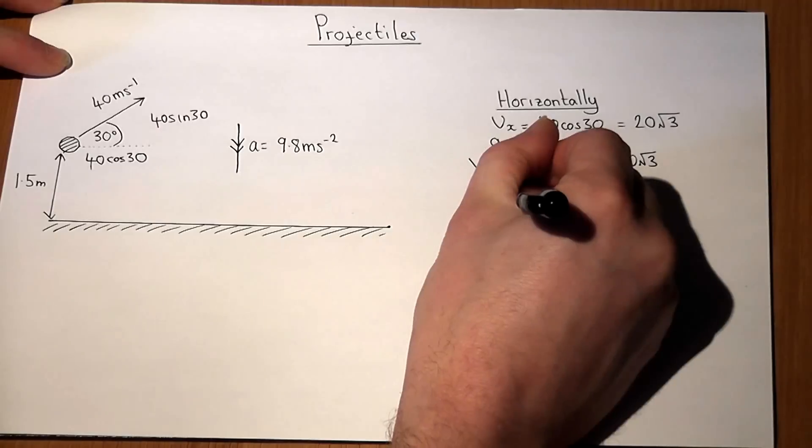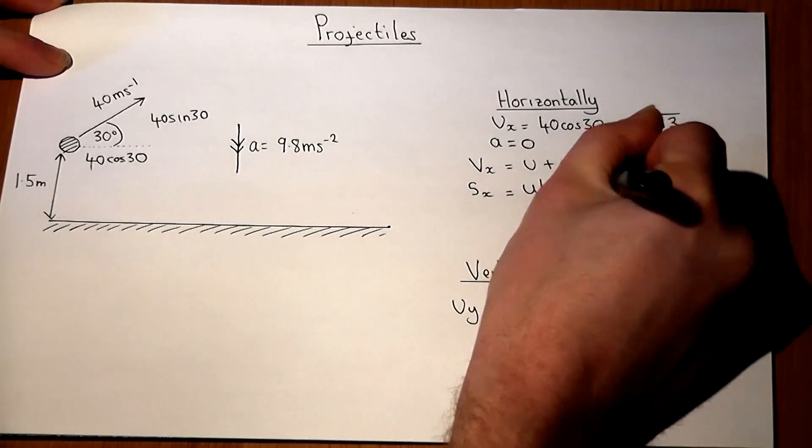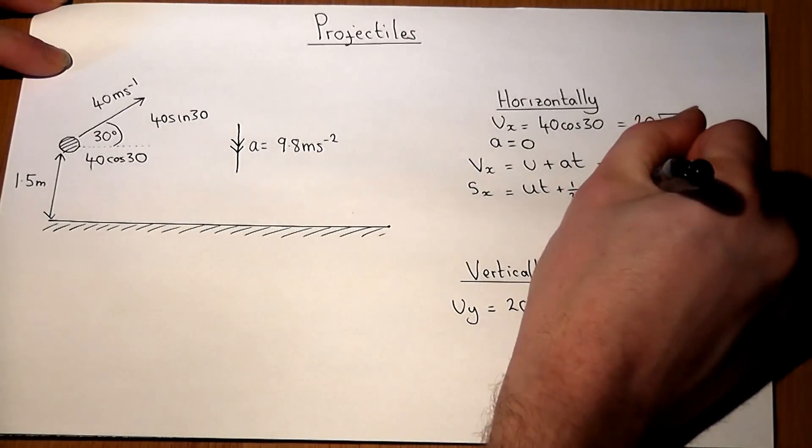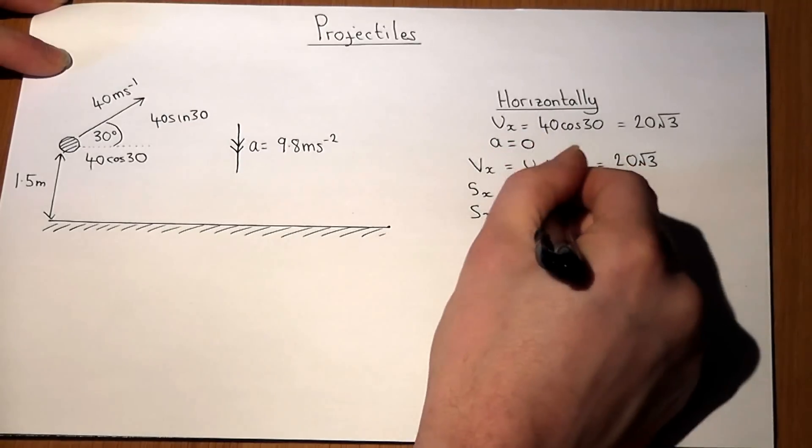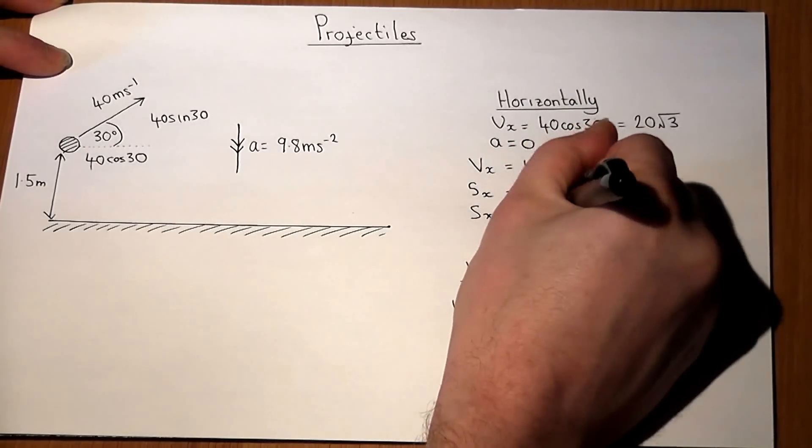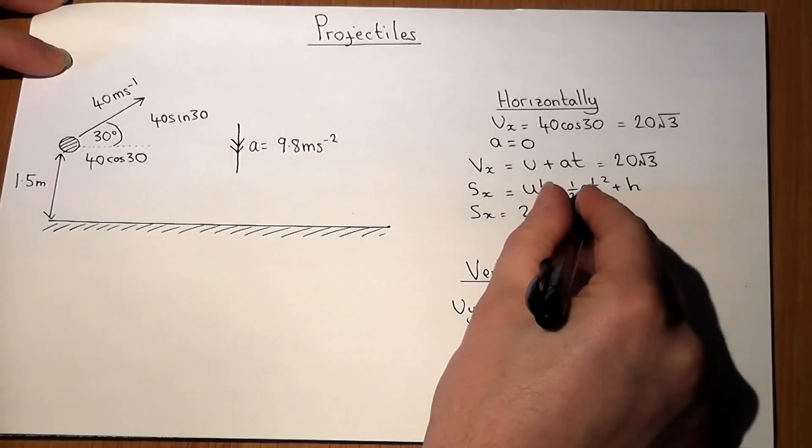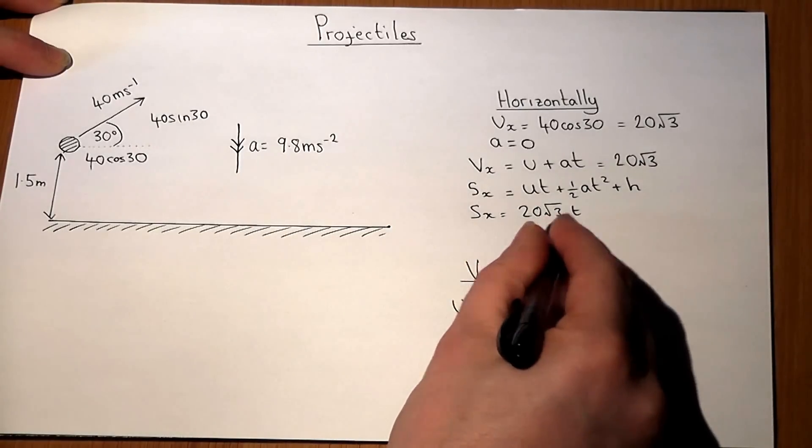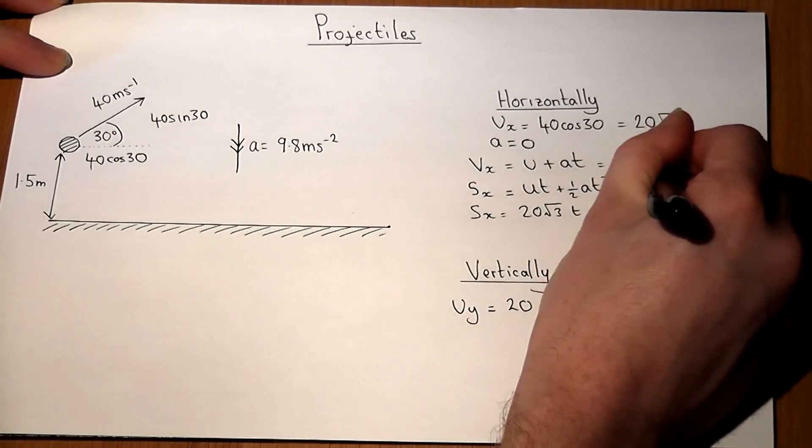And its position, which is called s_x, will equal ut plus a half at squared plus any initial position. So s_x will equal ut, that's 20 root 3 t, a is 0, it's got no initial horizontal position, so s_x will equal 20 root 3 t. So that's our velocity at time t and that's our position at time t in the horizontal direction.